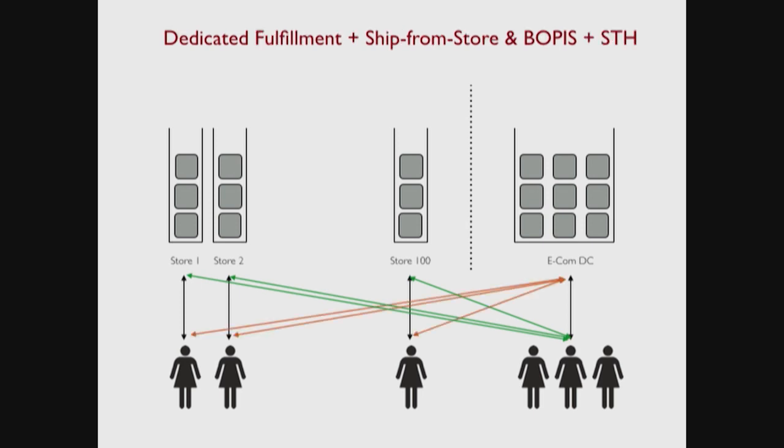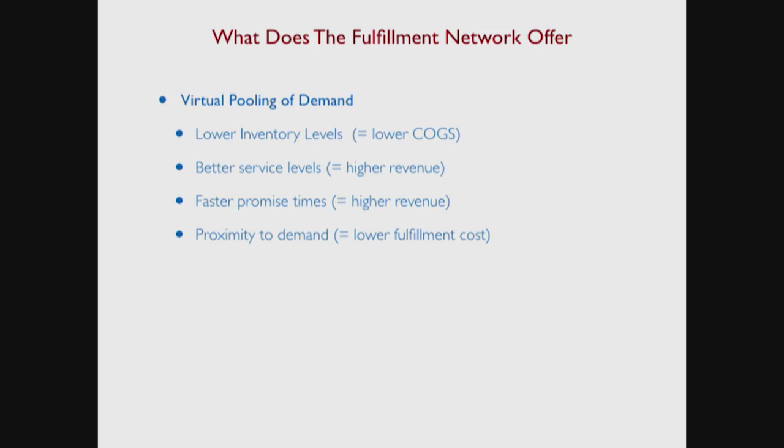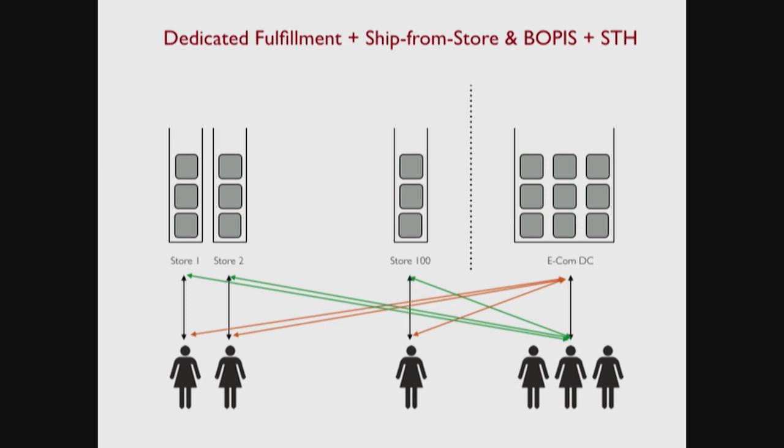Another way of connecting inventory to customers is ship to home — you walk into a store, you want something, but it's not quite there. Somebody at the store says, 'I'll have this shipped to your home, you'll get it tomorrow.' So you've actually built out this network connecting pools of inventory to your end customers. As dyed-in-the-wool inventory and ops people, what does that mean? From a strategic perspective, this results in virtual pooling of demand. All we did by drawing all these arcs is pool all of this demand risk together.